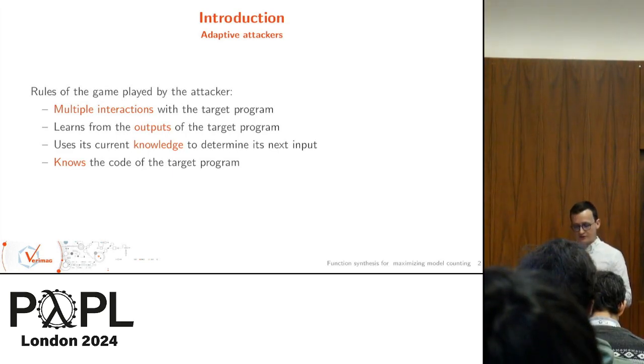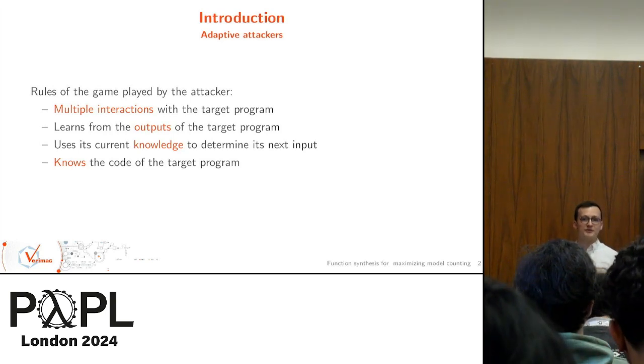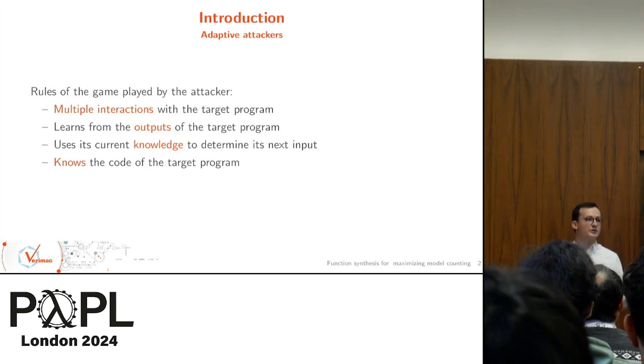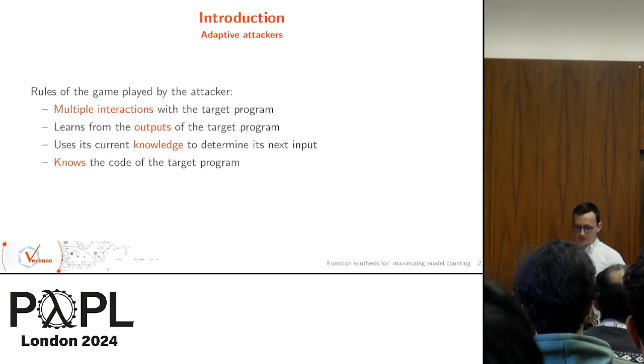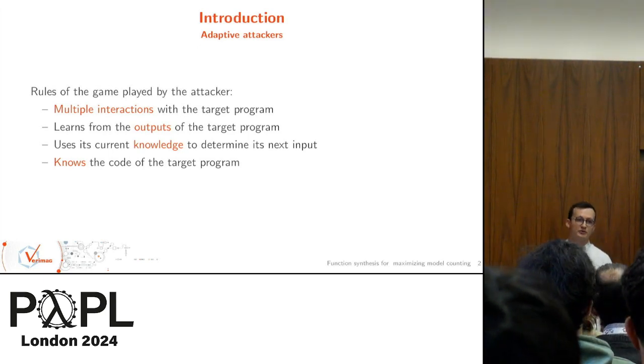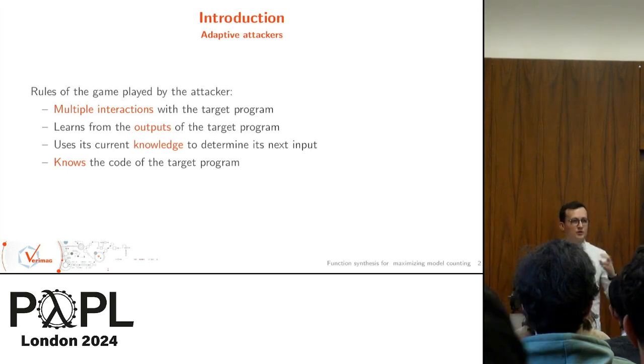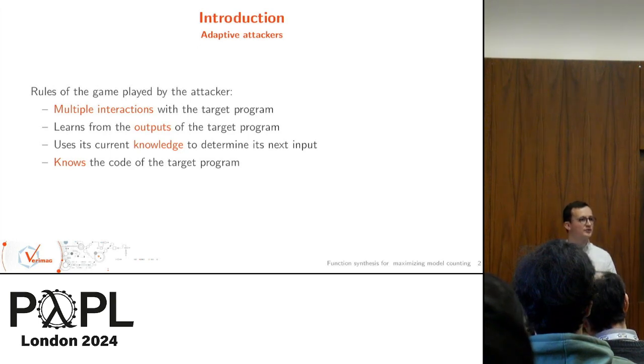There are a whole bunch of interactions going step by step. The program asks for an input, and so on. The attacker learns from the outputs of the program, and only from the outputs of the program. This is just a simplification, and avoids things like side channels and stuff. It obviously uses its current knowledge to determine its next inputs. And it knows the code of the target program.